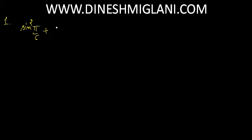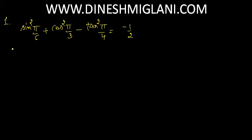First question: we have to prove that sin squared pi by 6 plus cos squared pi by 3 minus tangent squared pi by 4 is equal to minus 1 by 2. Taking the left hand side.